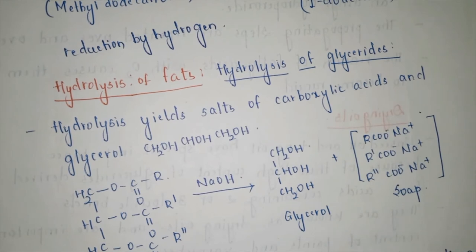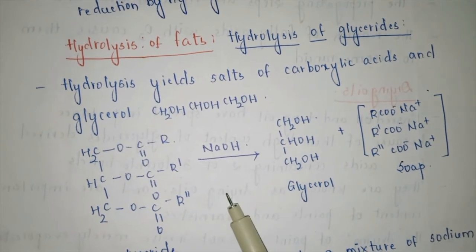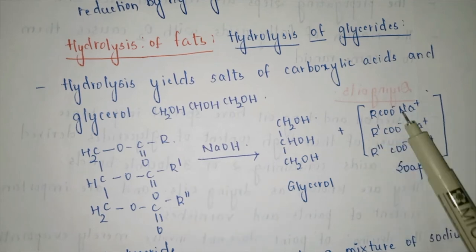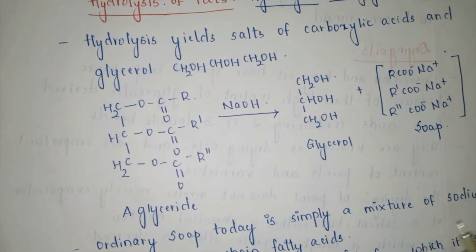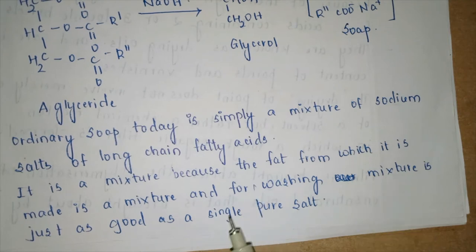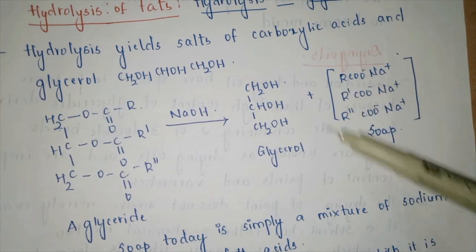The next concept is hydrolysis of fats. Hydrolysis of a glyceride system yields salts of carboxylic acids and glycerol. When a triglyceride is reacted with NaOH, glycerol is released and we get a soap. Ordinary soap is simply a mixture of sodium salts of long-chain fatty acids — a mixture because the fat from which it is made is itself a mixture. Whether R, R', and R'' are the same or different determines whether we get a mixture or a single pure salt.